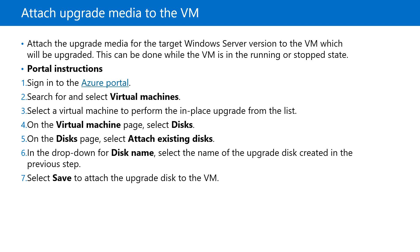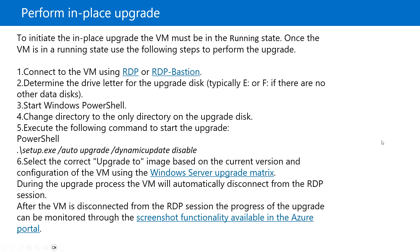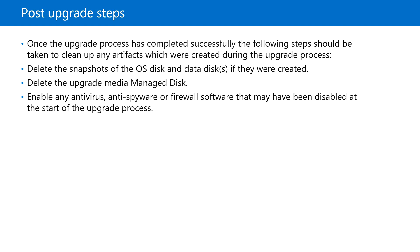Once we create the disk, we will attach that media to the virtual machine and then install the in-place upgrade — either by running setup.exe or via a PowerShell command. Once the upgrade succeeds, we can delete the snapshot and the upgrade media disk, and re-enable any antivirus, anti-spyware, or firewall software that was disabled. If the upgrade failed, we can create a disk from the snapshot and swap the disk.